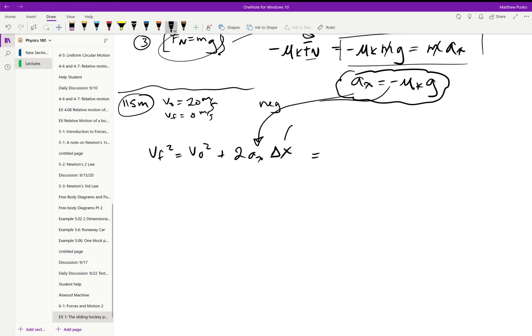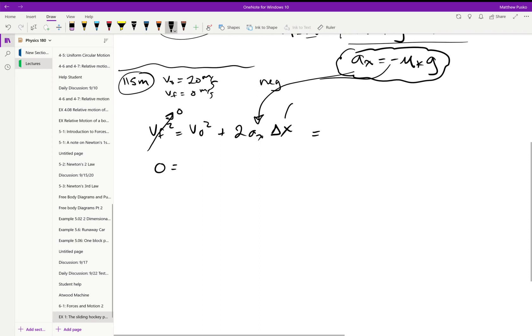And we know that the final velocity went to zero, so I'm going to get zero is equal to v naught squared plus two times the acceleration in the x direction. Nope, sorry, if I substitute that in there, I get a minus two times mu k times gravity times our delta x.